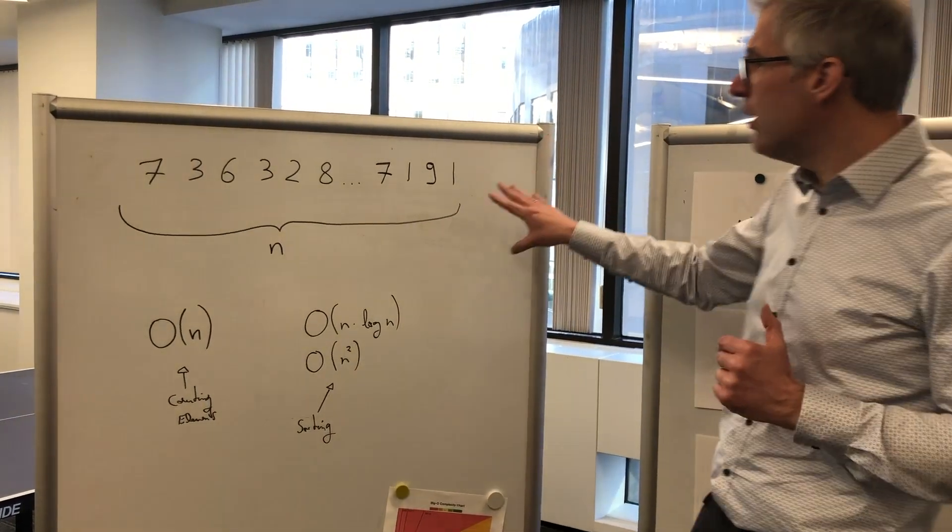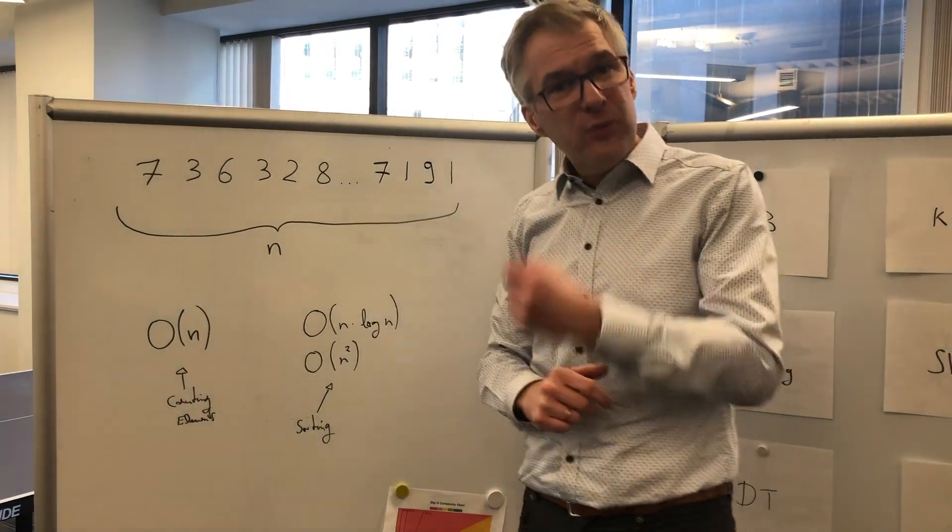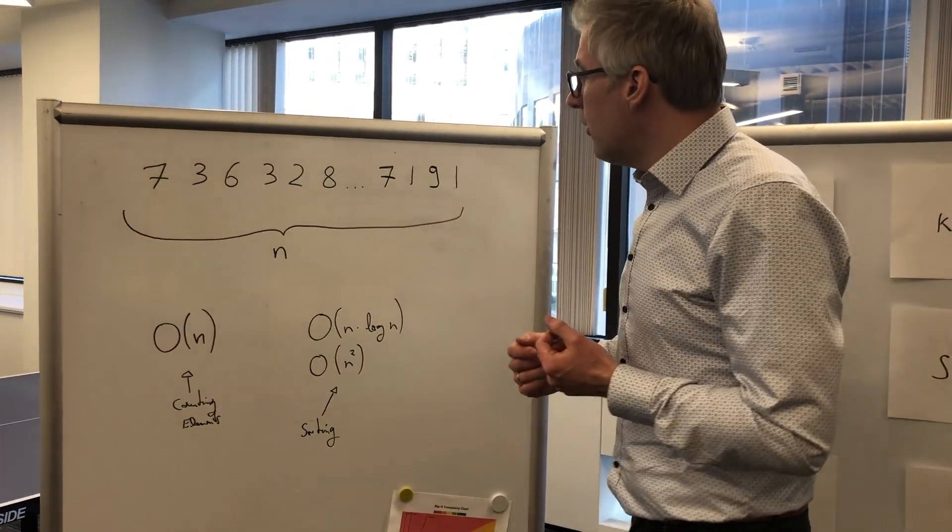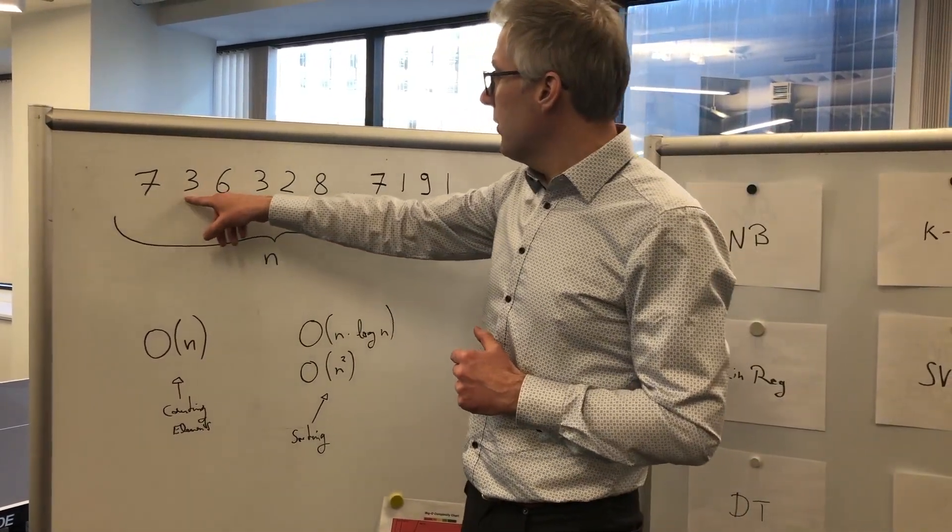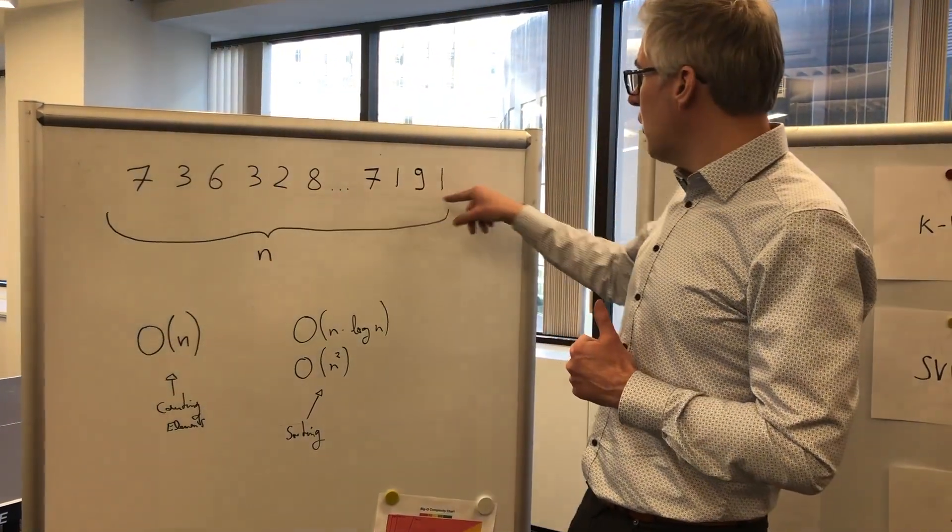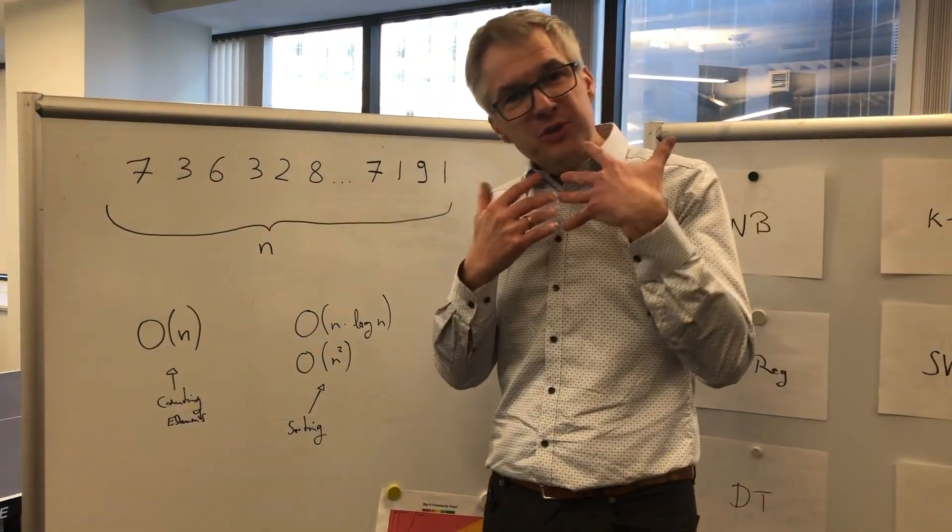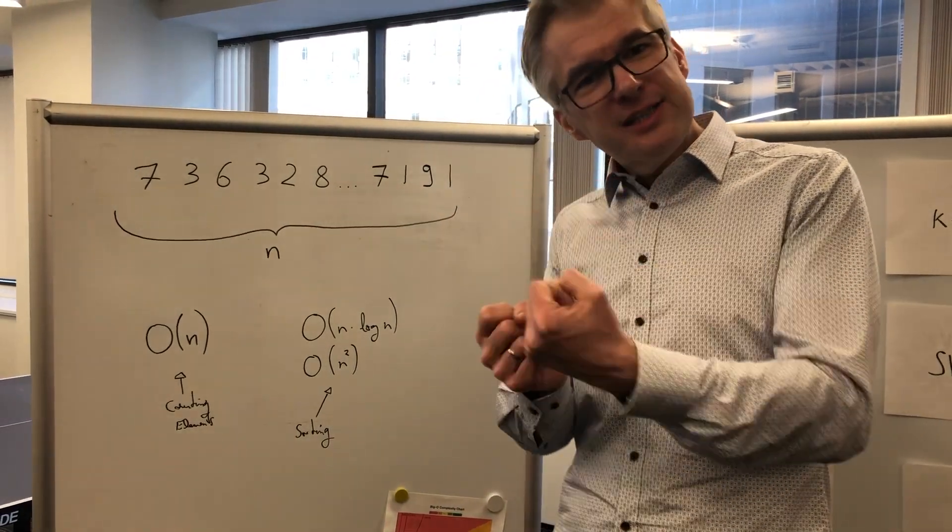Let's say my task would be to count how often the digit 3 occurs in this number. Obviously, I could start here - that's not a 3. Here we have a 3, so 1, 2, and so on, going through all those numbers. And if I would do this, how many checks would I need to do?